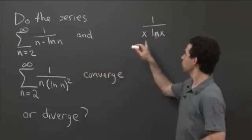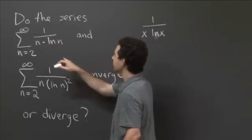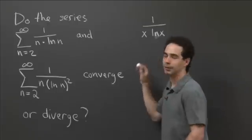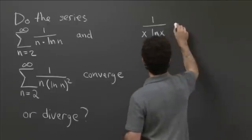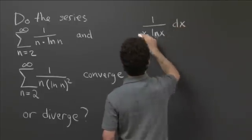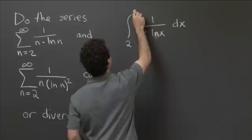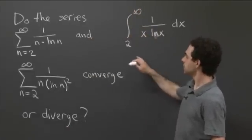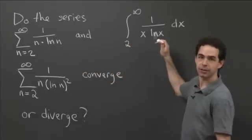So let's do the first one first. What's the integral associated with it? Well, we take the integrand, and frequently we replace the variable n with the variable x, although that doesn't really matter. And so what we do is we look at the integral of this integrand over the same region. So in this case, from 2 to infinity. And so what we know is that this sum converges if and only if this integral does.